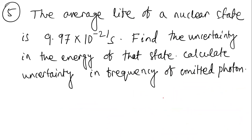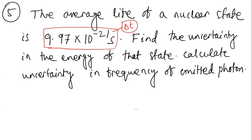The last question: the average lifetime of a nuclear state is 9.97 × 10⁻²¹ s. We treat this as the uncertainty in time Δt. The canonically conjugate pairs are Δx·Δp and ΔE·Δt — energy and time follow the same uncertainty relation: ΔE·Δt ≥ ℏ/2.